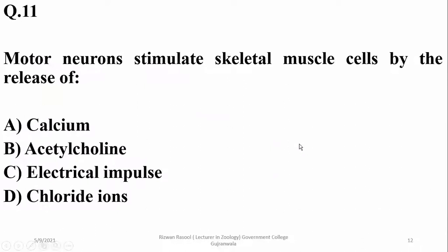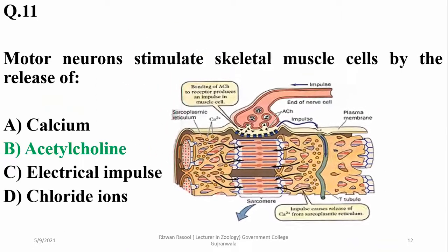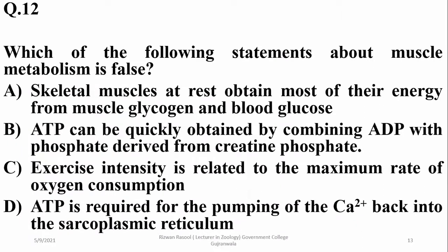Motor neurons stimulate skeletal muscle cells by the release of acetylcholine at the neuromuscular junction. Regarding muscle metabolism, the false statement is: ATP is required for pumping calcium back into the sarcoplasmic reticulum — this is incorrect. Skeletal muscles first obtain energy from muscle glycogen and blood glucose, and ATP can be quickly obtained from creatine phosphate. The answer is delta.